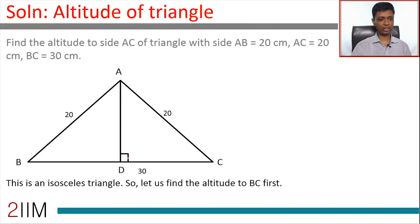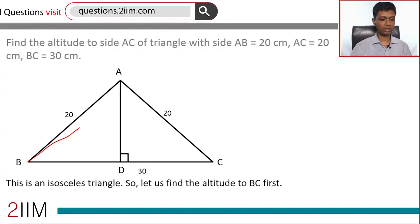We need to find altitude to side AC. From B we need to draw a line perpendicular to AC.